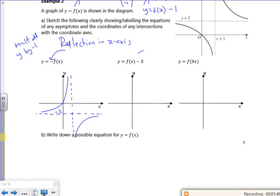There we go. Minus 3 is our translation. 0 minus 3. So the x asymptote is still the same. But the y one has gone down by 3. So now that's at minus 1.